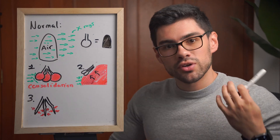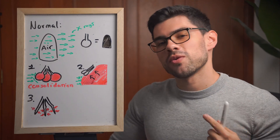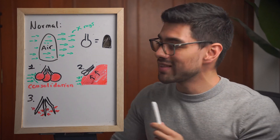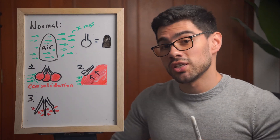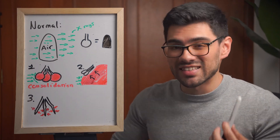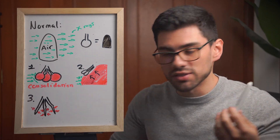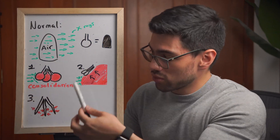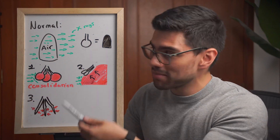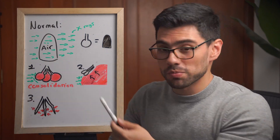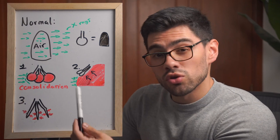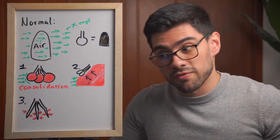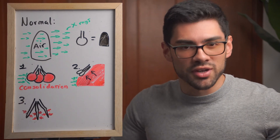For the image to appear white, one of three things needs to happen. Number one: the air in the alveoli is replaced with something dense — something like fluid or cells. Dense material blocks X-rays, so by blocking them the image appears white. This is called consolidation: the filling of the alveoli by something other than air.